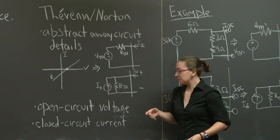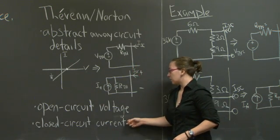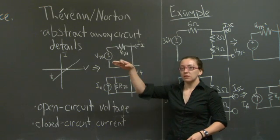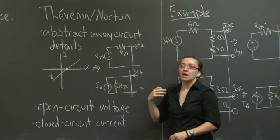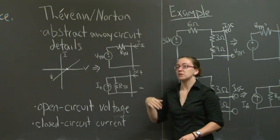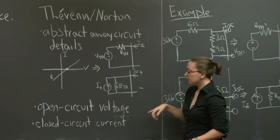Likewise, if we want to find the other intercept, we can close those two terminals by running a wire across them and then look at the current that flows across that wire. That's the closed circuit current.